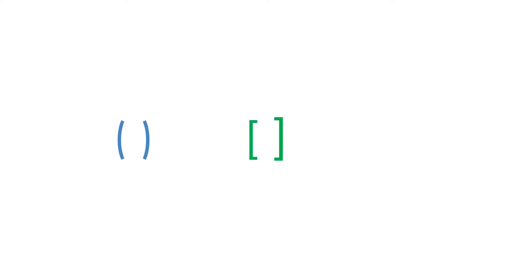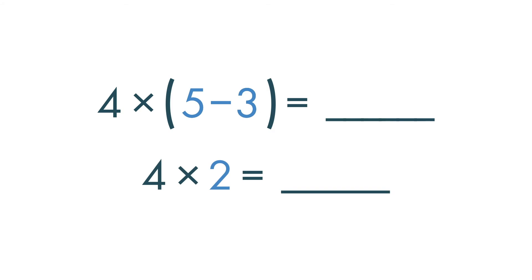Parentheses, brackets, and braces can all be used to group parts of an equation. When an equation has parentheses, we do that part of the equation first. 5 minus 3 is equal to 2, and 4 times 2 is equal to 8.